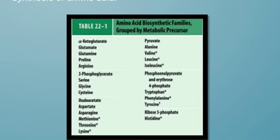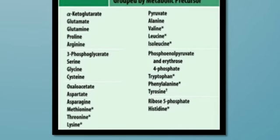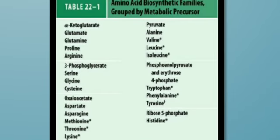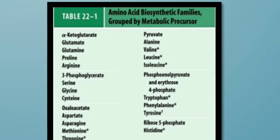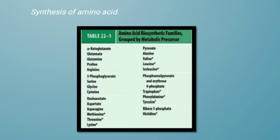The next topic is biosynthesis of amino acids. A table of amino acid biosynthetic families grouped by metabolic precursors shows that: alpha-ketoglutarate can form glutamate, glutamine, proline, and arginine; pyruvate can form alanine, valine, leucine, and isoleucine; 3-phosphoglycerate can form serine, glycine, and cysteine; oxaloacetate can form aspartate, threonine, and lysine; and ribose-5-phosphate can form histidine.